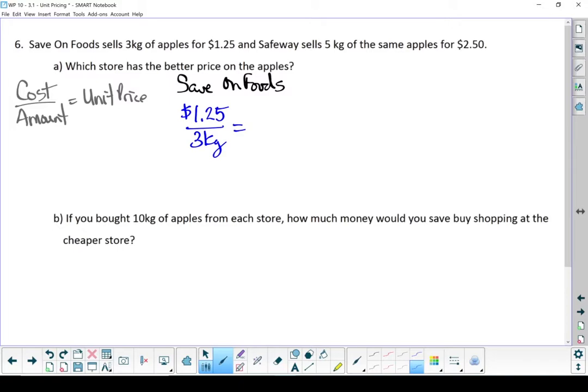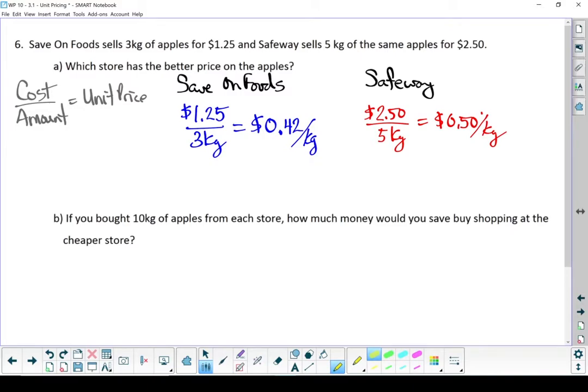Let's start with Save on Foods. $1.25 for 3 kilograms of apples. Divide those two numbers and at Save on Foods, it's going to cost you $0.42 per kilogram. Let's take a look at Safeway. Their apples are $2.50 for 5 kilograms. Divide those two numbers and we get 50 cents per kilogram. Now we're looking for the cheapest price. Save on Foods has that cheapest price. Now when you're answering these questions, it's not enough to just have the numbers.